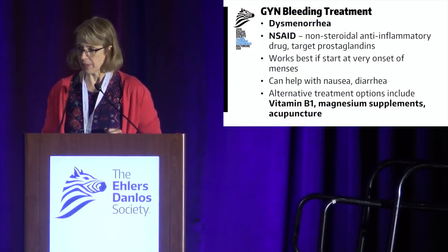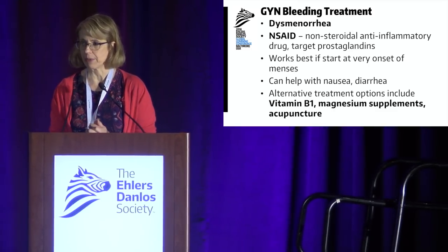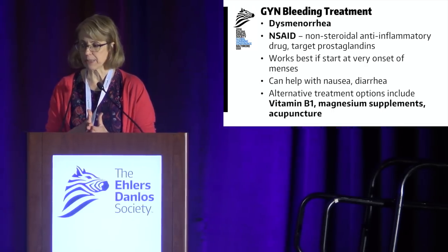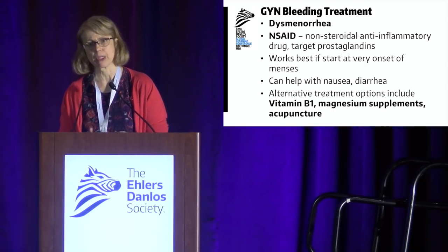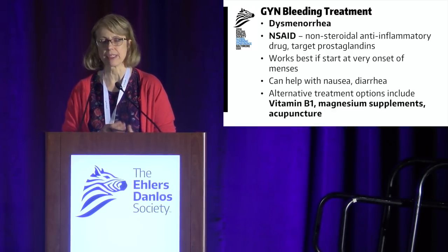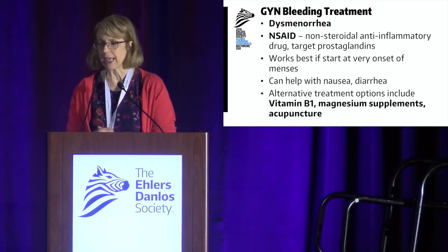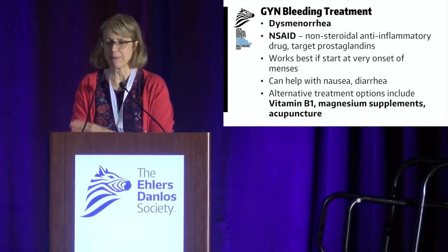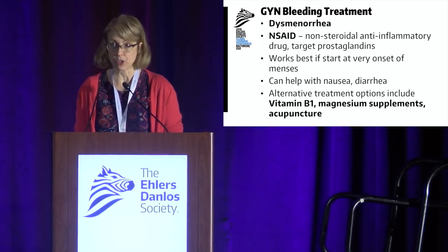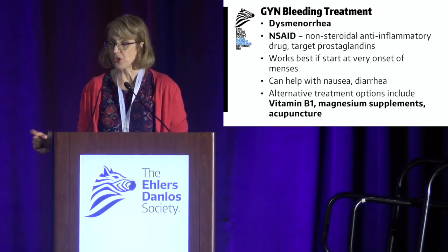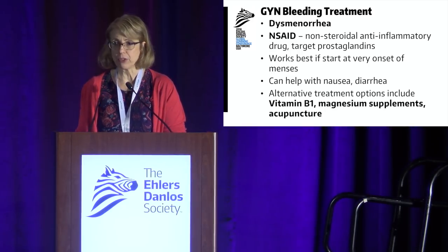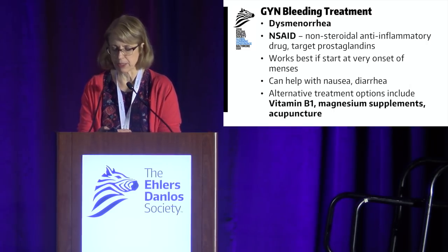Treatment is the same as for everybody. Start with a non-steroidal anti-inflammatory targeting prostaglandins — we're talking about Motrin, Ponstel, Anaprox, that whole family. These work best if given the second you start menstruating, so if you're irregular they may not be the best option. They also relieve nausea and diarrhea associated with the cycle. Alternative treatments include vitamin B1, magnesium supplements, and acupuncture; they've been used and work for some people, though without strong scientific studies.